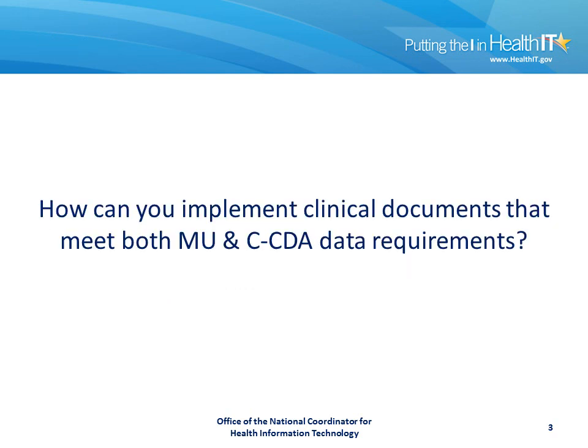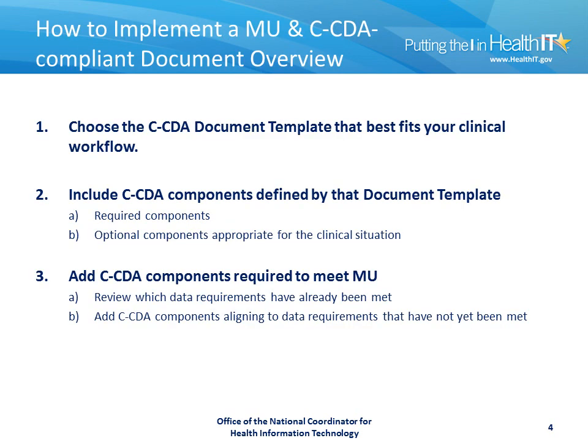So how can you implement clinical documents that meet both Meaningful Use and Consolidated CDA requirements? First, you should choose the Consolidated CDA document template that best fits your clinical workflow. You start by including the Consolidated CDA components defined by the document template, beginning with the required components, and then adding optional components that are appropriate for your clinical situation. When you're done, you then add the Consolidated CDA components that are necessary to meet the Meaningful Use data requirements, reviewing which data requirements have already been met and adding any additional CDA components necessary to align with remaining requirements.